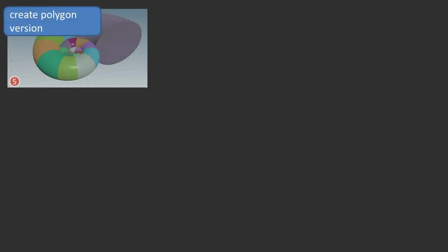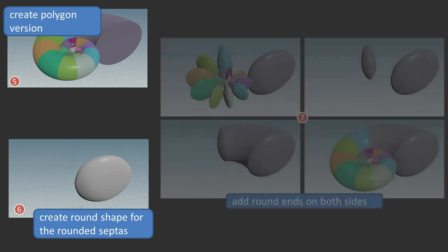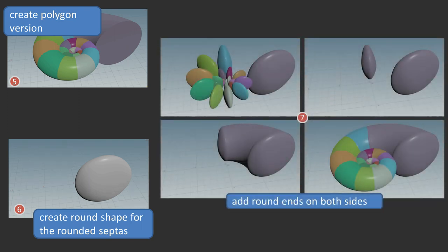The geometry setup to generate the geometry starts by creating a polygon version of the chambers. For the round chamber dividing walls, the scepters, a flattened sphere-like shape is generated. This flattened sphere will be added to both sides of the chamber segments. No boolean is needed. We have overlapping geo here, but that does not matter. You will see shortly why.